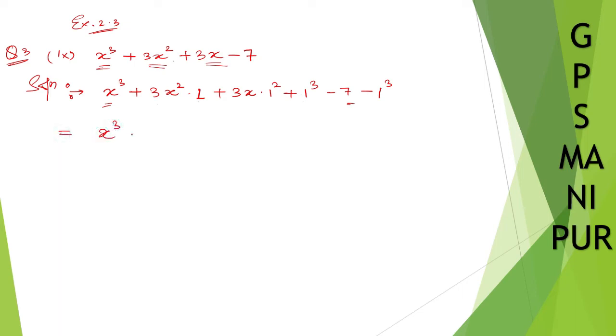Now x cubed plus thrice, let me write down the formula. A cubed plus thrice a squared b plus thrice ab squared plus b cubed, the formula is a plus b whole cube. X plus 1 whole cube minus 7 minus 1. Minus 7 minus 1, it will be minus 8.